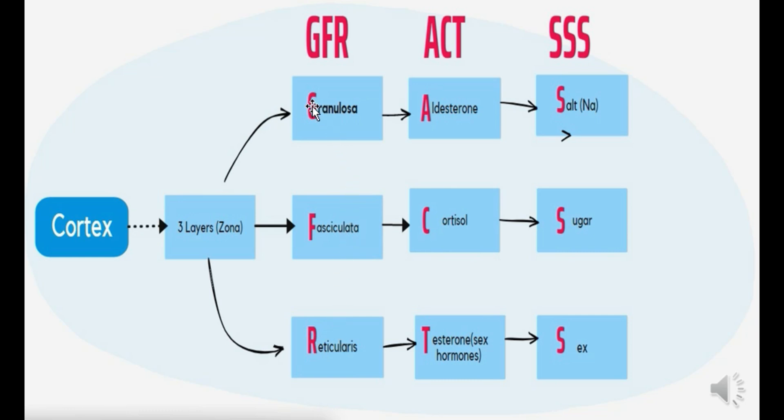We can use the mnemonic GFR to remember them easily: granulosa, fasciculata, reticularis - GFR. Granulosa secretes the hormone aldosterone, fasciculata secretes cortisol or glucocorticoid, and reticularis secretes testosterone or androgen. We can use the mnemonic ACT to remember them.